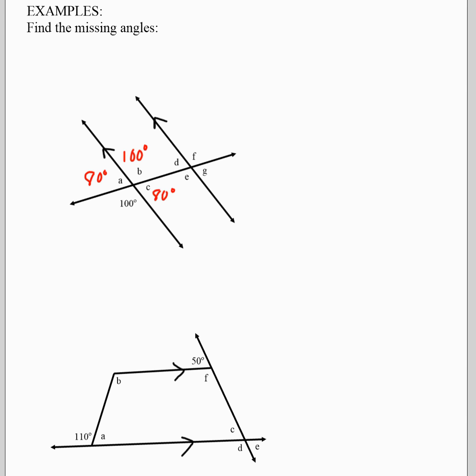So again, you're using things like your F patterns and your Z patterns and your C patterns. For example, right here, there's an F pattern. So what that tells me is it tells me that the letter B and the letter F are corresponding, which means if B is 100, then so is F. Once I have that, I know that E is opposite and G is supplementary and D is also supplementary.